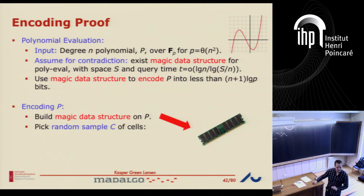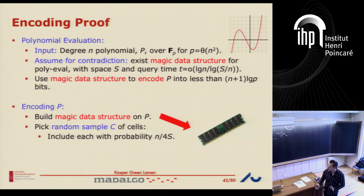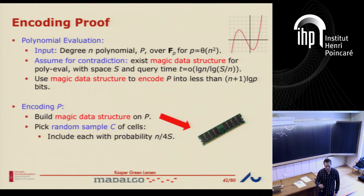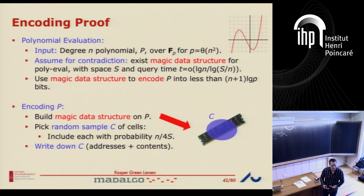I include each of the cells with probability n over 4s, taking each independently. I include this memory cell in my sample. I get some subset of the cells — call it C. My encoding of this polynomial is just: I write down this set C. I write the address and the contents of each cell.